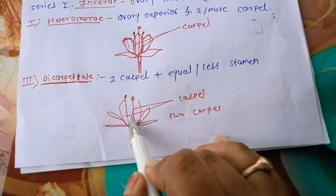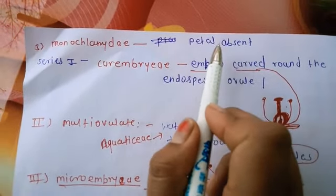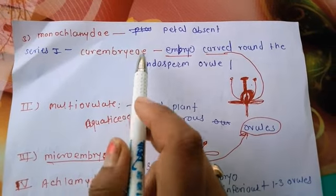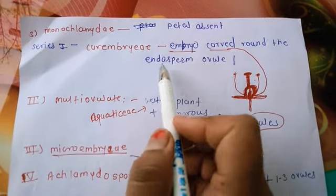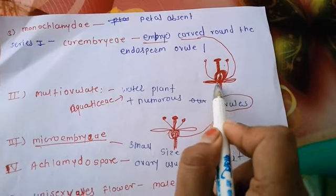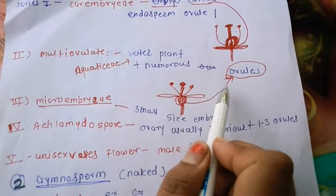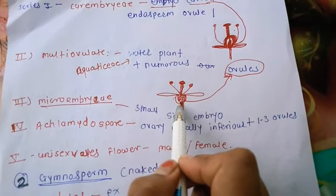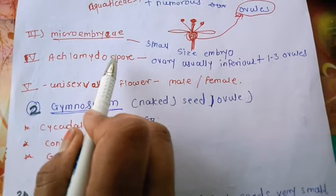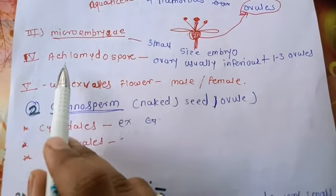The third type is monoclamide, where petals are totally absent. The series within monoclamide include: first, curvembryae, where the embryo is already curved — the embryo curves around the endosperm and ovule; second, multiovulatae water plants, which have numerous ovules — two or more ovules present.